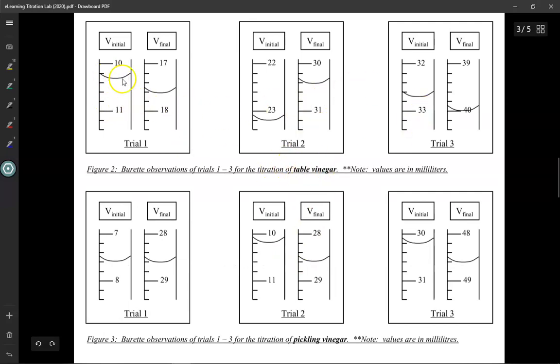Here's what I measured the initial volume of sodium hydroxide to be. Then after the titration once it's been drained out it got down here. Now be careful, watch these volume values, it goes upside down. So 10 is at the top. 11 is at the bottom.